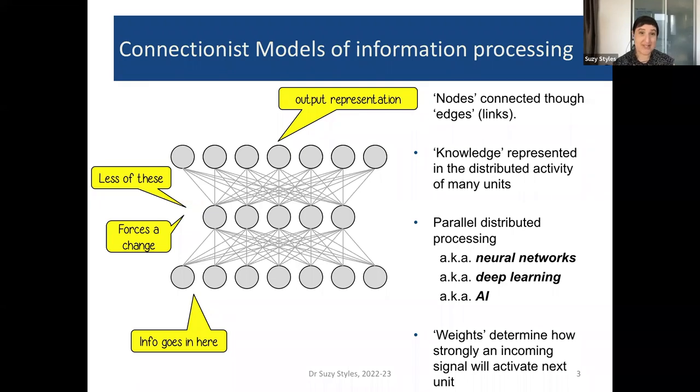Parallel distributed processing networks are also known as neural networks, which is another word for deep learning, or a phenomenon also known as AI or artificial intelligence. The other feature of these Connectionist models is that the weights will determine how strongly an incoming signal is passed on to outgoing connections. We'll talk about each of these features in a little bit more detail as we go along.